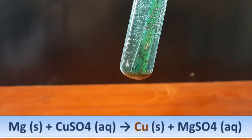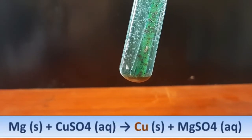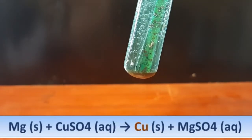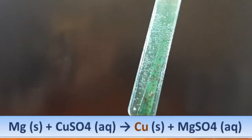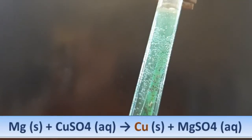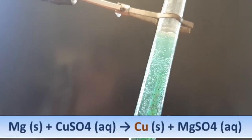Magnesium reacted in the copper sulfate solution and displaced the copper and produced magnesium sulfate. You can see that the blue color in the solution has reduced and the brown precipitate deposited at the bottom has increased.